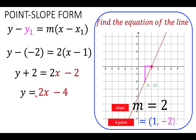Let's check if this is correct. The y-intercept is negative 4, which is verified because the point of intersection between the y-axis and the red line is indeed y equals negative 4. And the slope — we go up two units and right one unit — that is 2 over 1, or 2. So this equation is verified to be correct.